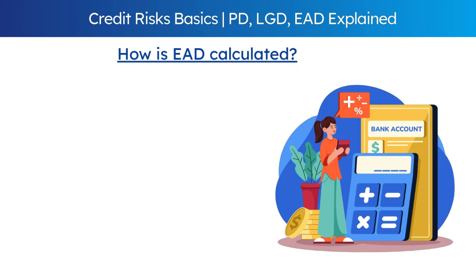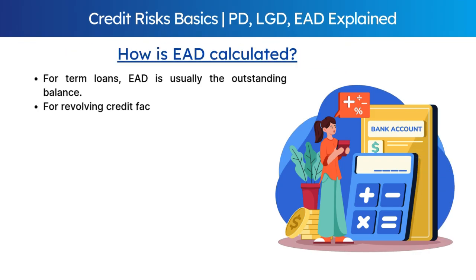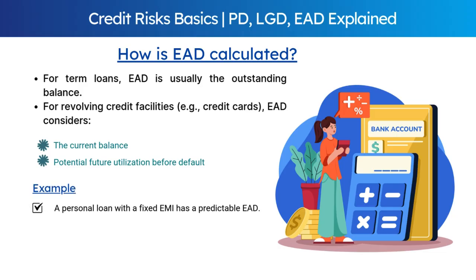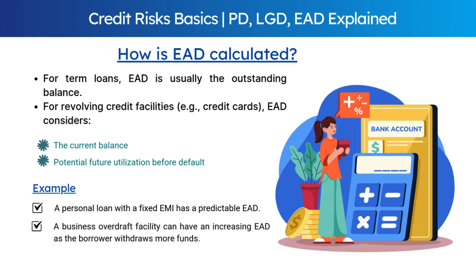How is EAD calculated? For term loans, EAD is usually the outstanding balance. For revolving credit facilities like credit cards, EAD considers the current balance and the potential future utilization before default. For example, a personal loan with a fixed EMI has a predictable EAD, but a business overdraft facility can have an increasing EAD as the borrower withdraws more funds.